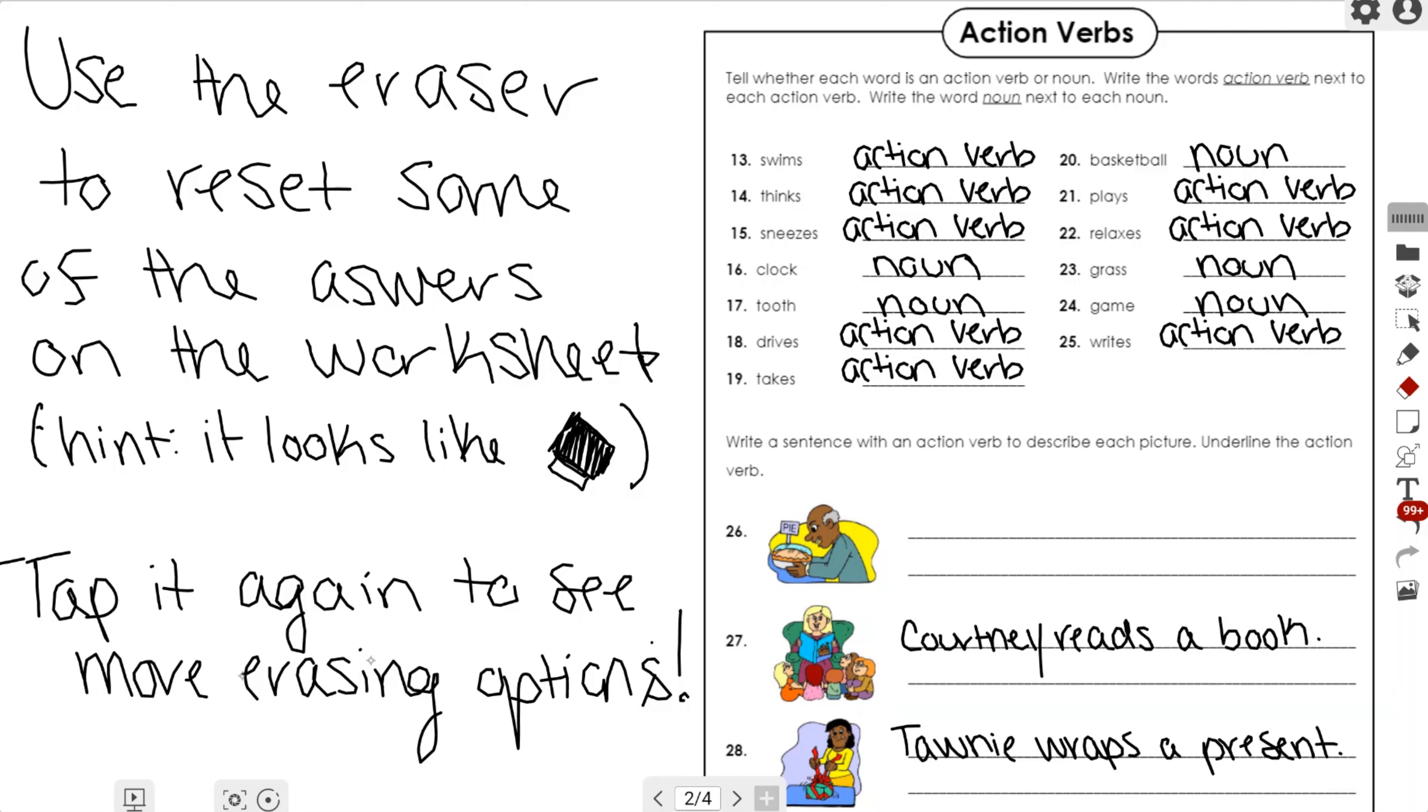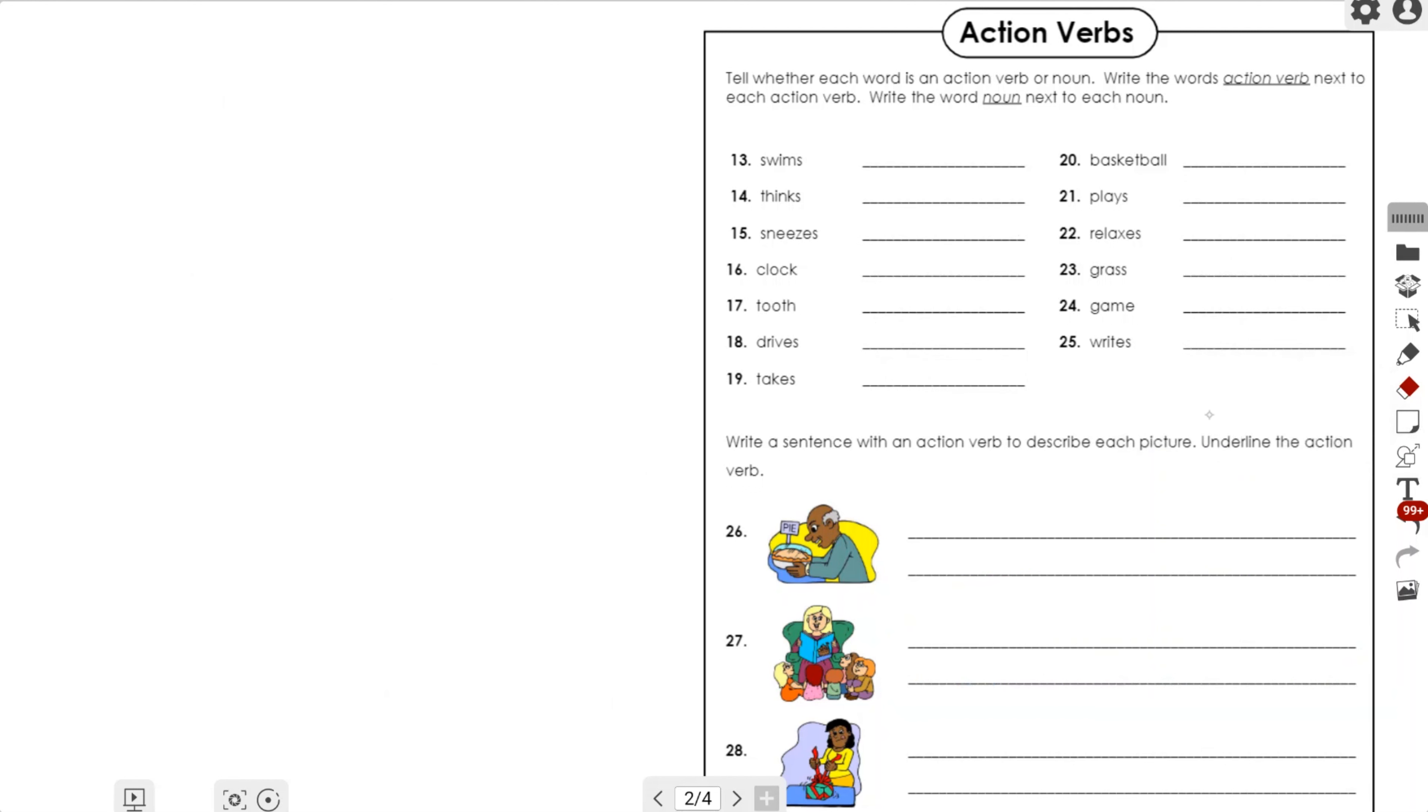However, if I tap that eraser tool one more time, I have the option to choose from a number of different things. The second one is an area select, so I can do a circle to get rid of the selected area.